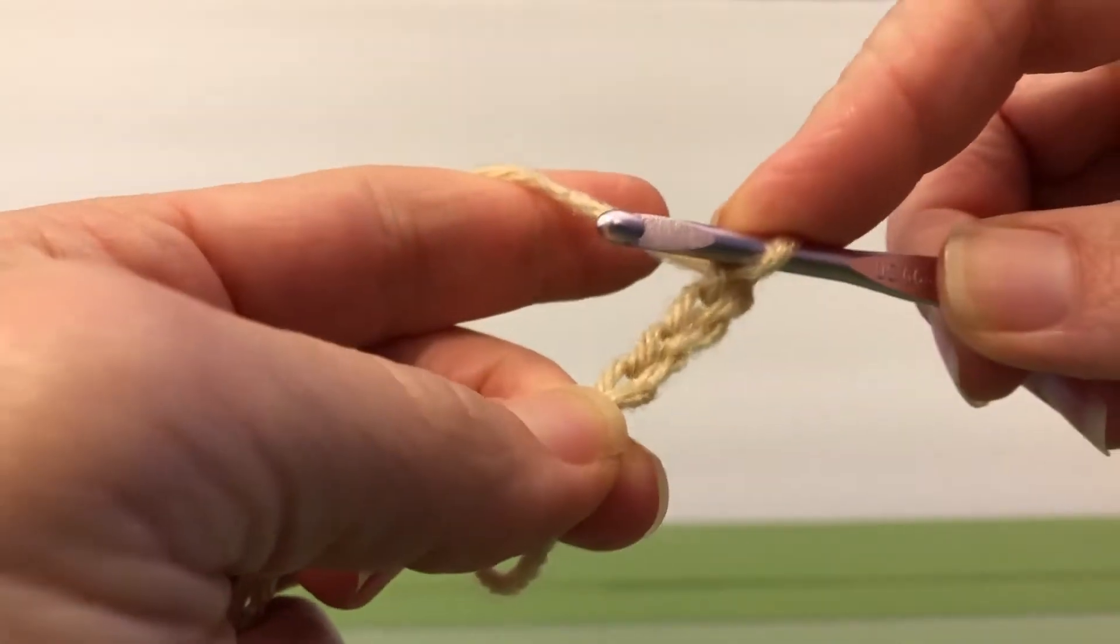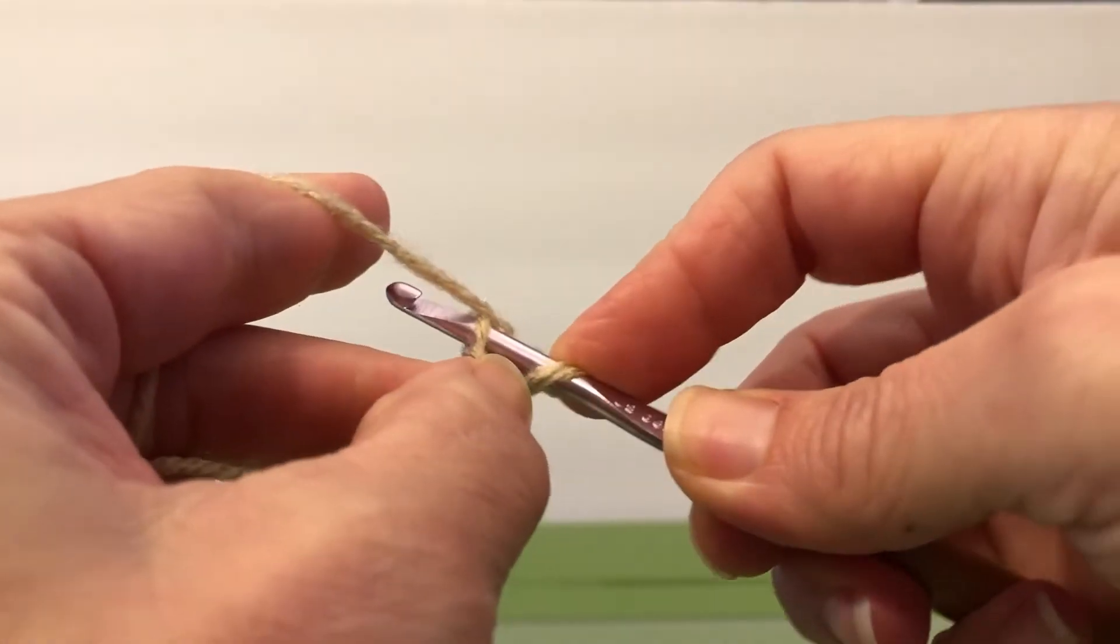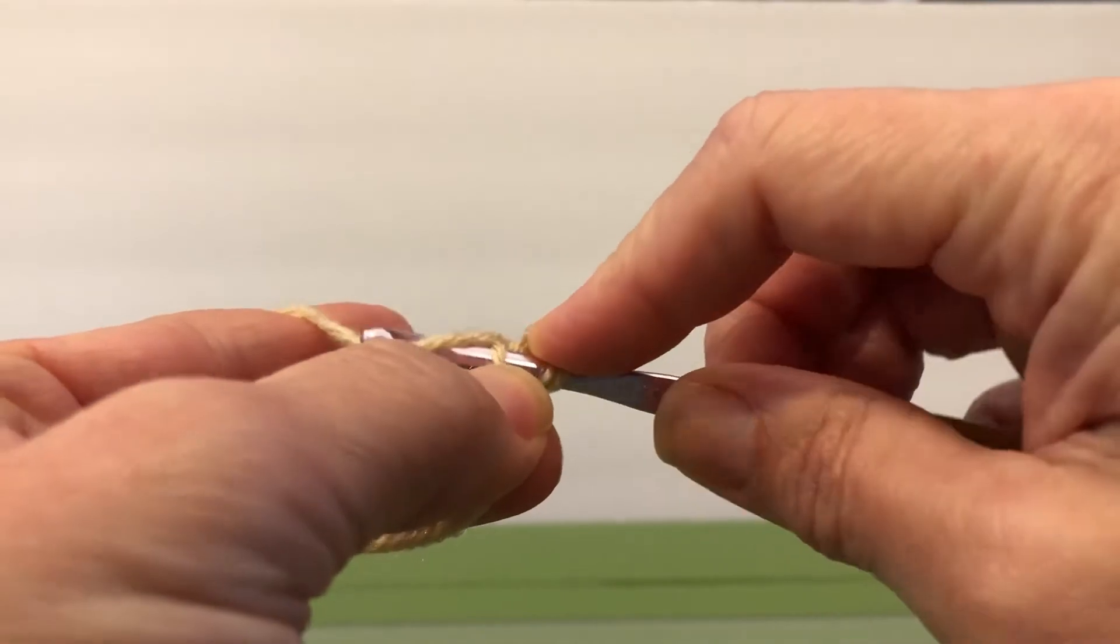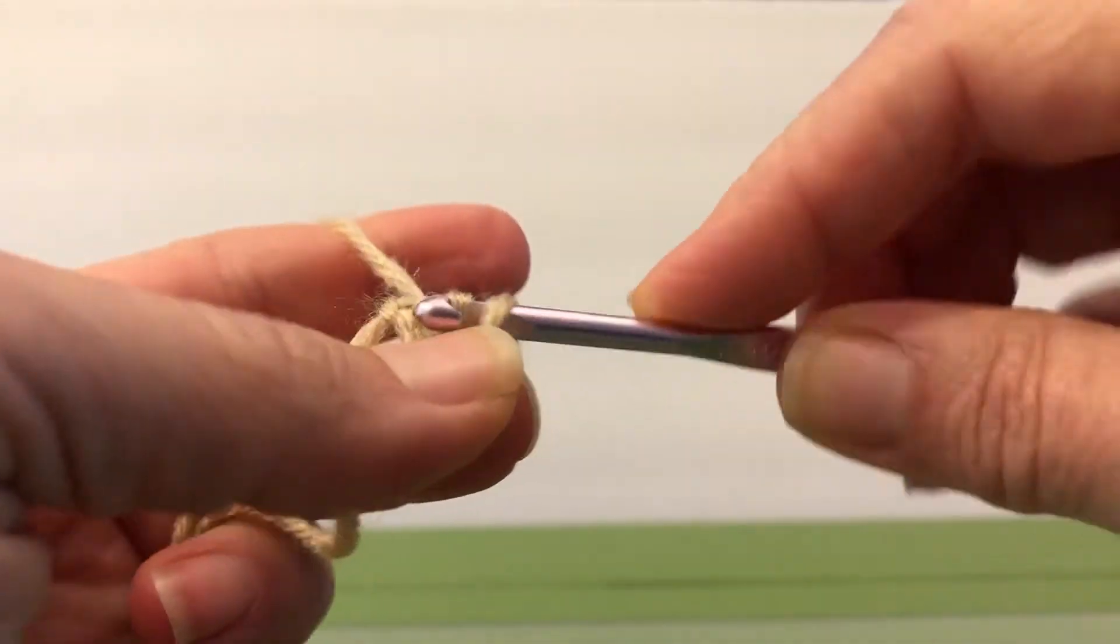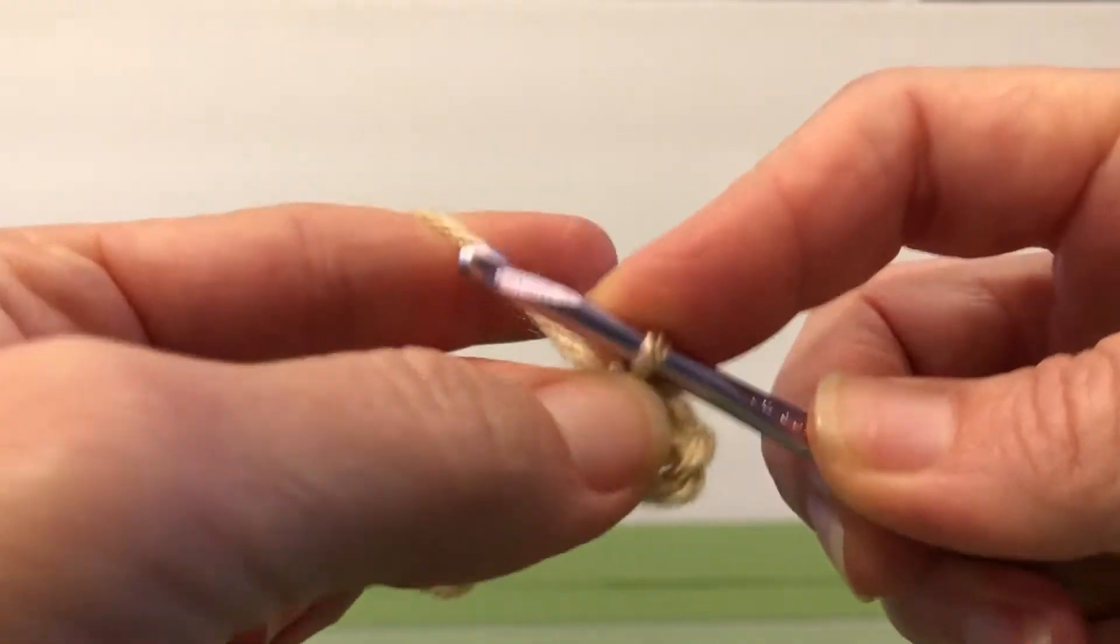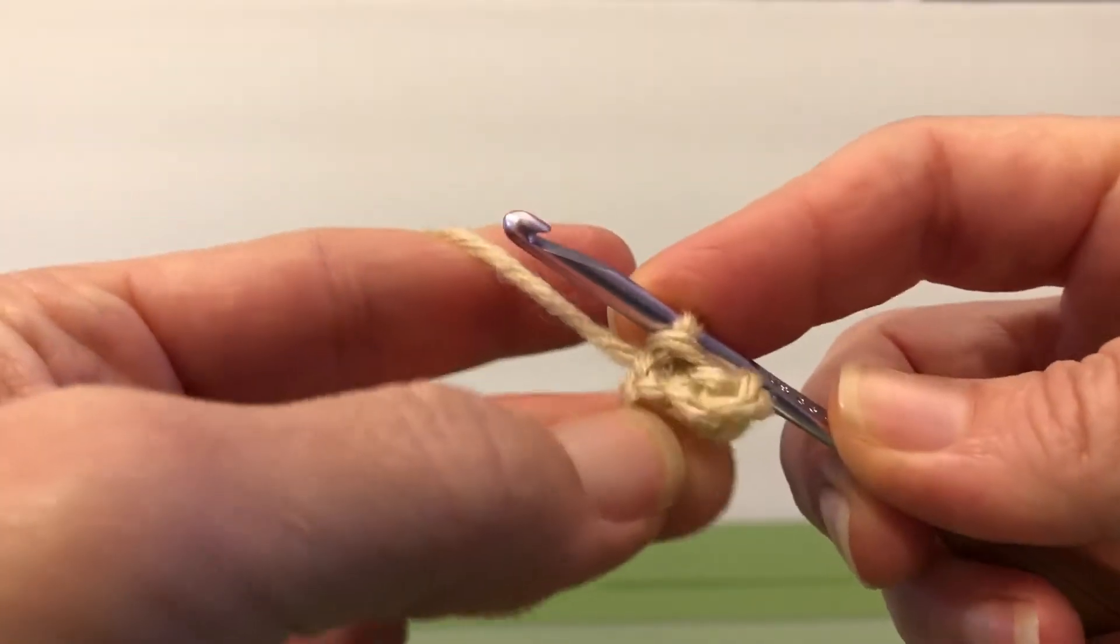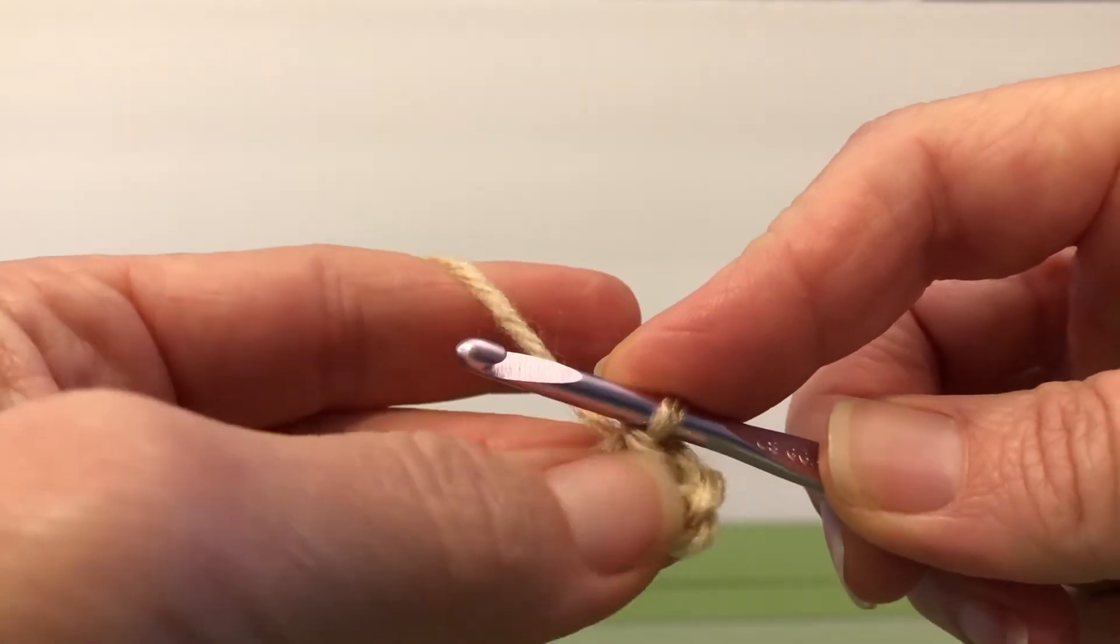We're going to go to our first chain and we're going to do a slip stitch here. This is going to join it into a circle. So we're going to yarn over, pull through, and pull through the loop on our hook here. So we now have a circle.